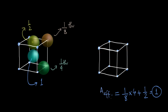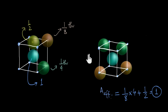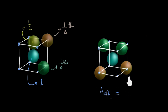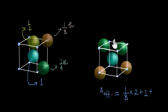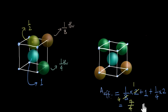Here is another example: a unit cell with two atoms at corners, one at the body center, and two at edge centers. Corner contributions: (1/8) × 2. The body-center atom is 100% inside: contribution = 1. Each edge-center atom contributes one-fourth, and there are two: (1/4) × 2. Solving: 2/8 + 1 + 2/4 = 0.25 + 1 + 0.5 = 1.75. So A_effective = 7/4 = 1.75 atoms per unit cell.